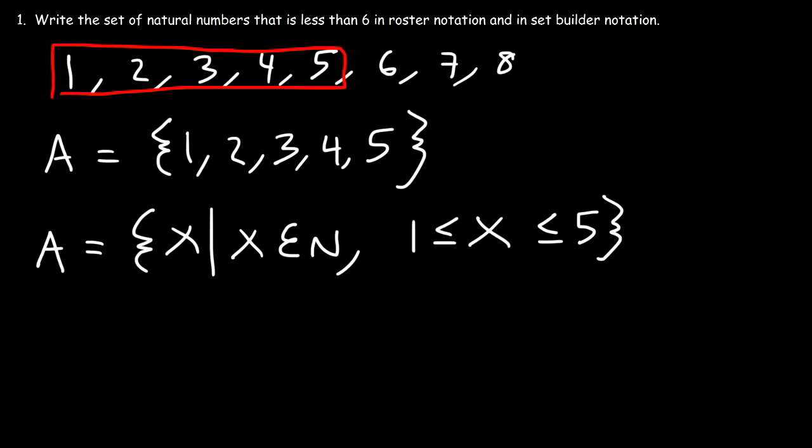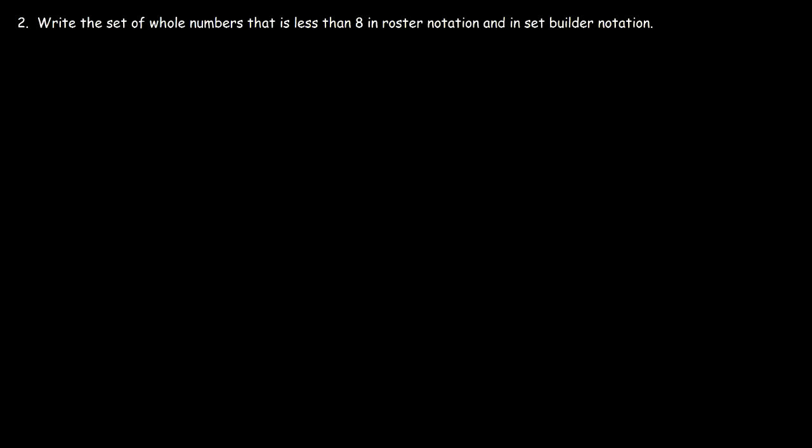Let's go ahead and work on some more examples. Number 2: write the set of whole numbers that is less than 8 in roster notation and in set-builder notation. Whole numbers are natural numbers, but they also include 0. So 0, 1, 2, 3, 4 — these are all whole numbers.